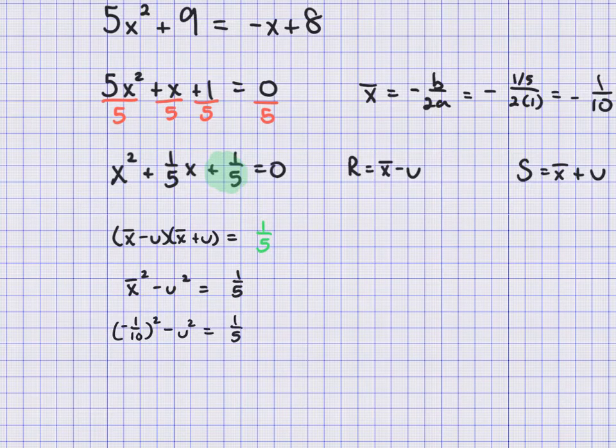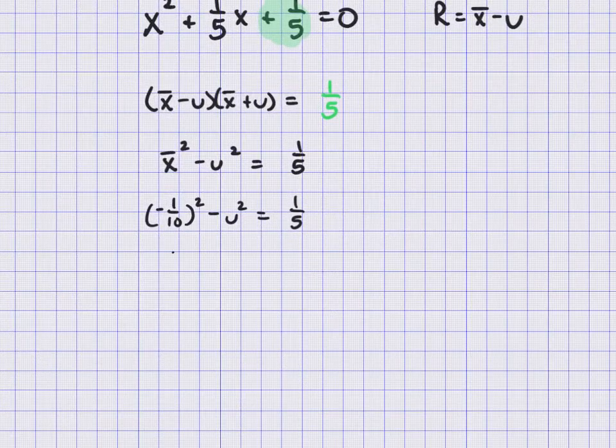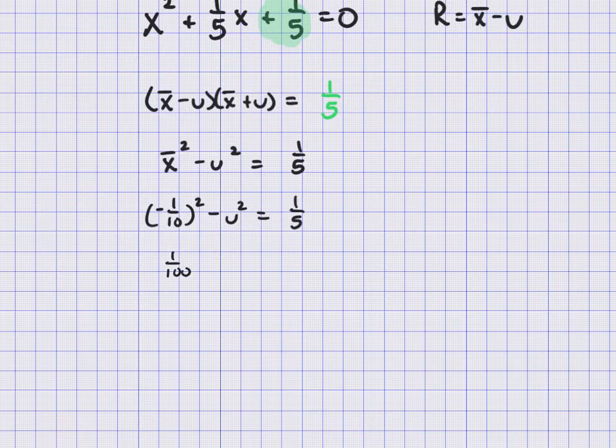And we get this. Now I'm going to simplify. So I get 1 over 100 minus u squared, and equals, just to clean this up here,